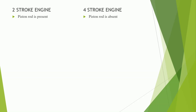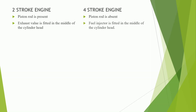The 8th difference: in a 2 stroke marine engine, the exhaust valve is fitted in the middle of the cylinder head. The 9th difference: in a 2 stroke engine, the camshaft to crankshaft ratio is 1 to 2.